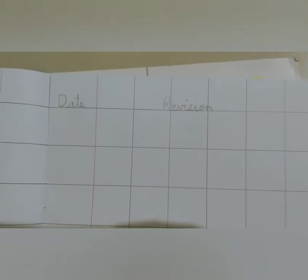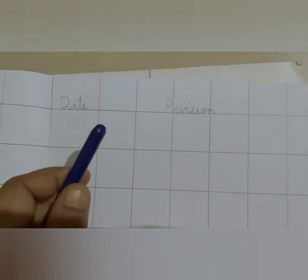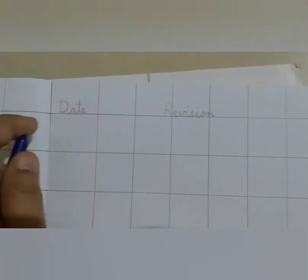Now let's revise the numbers we have learnt. We will practice in the notebook using your crayon. So in the top we can write today's date and the topic revision.